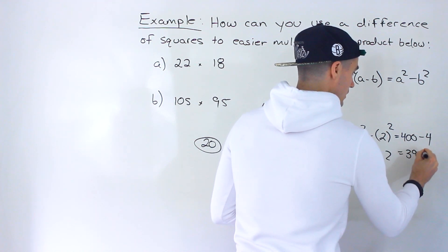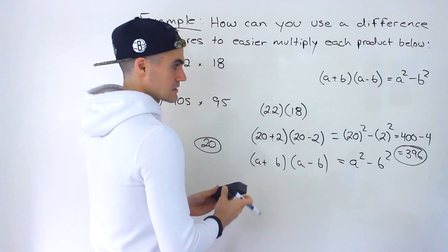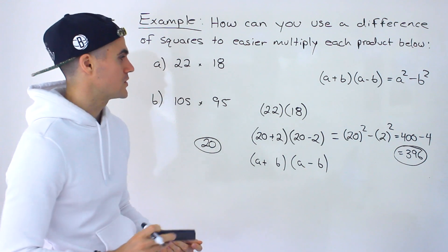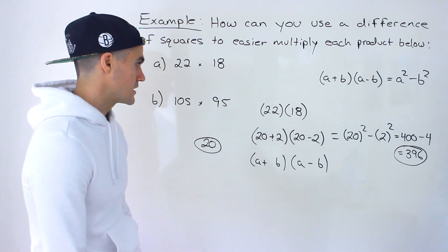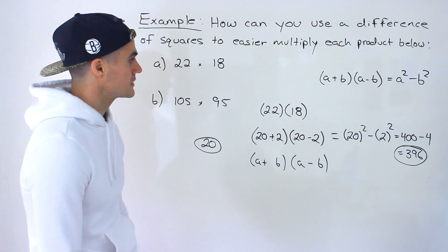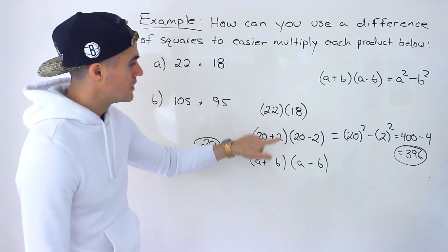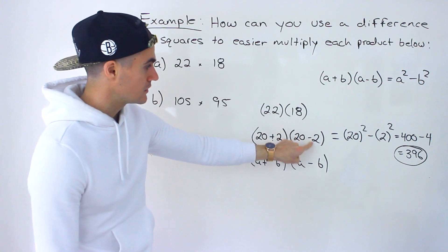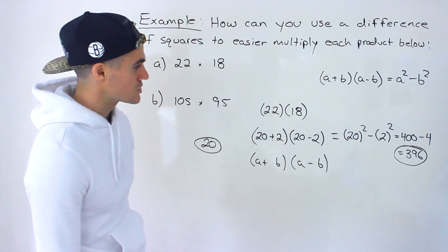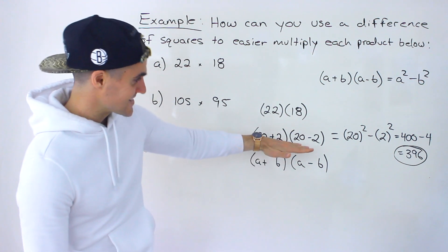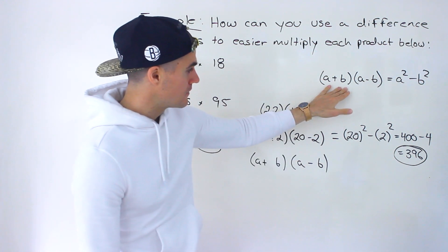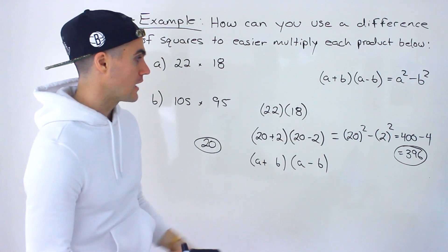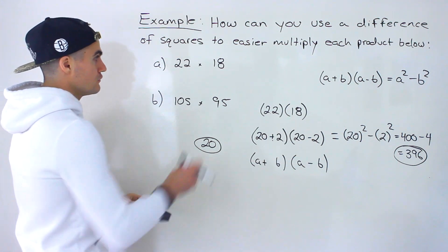And then 2 to the power of 2 is 4. So we end up with 396. So again kind of a weird question but I see it come up sometimes. So just in case you run into it wanted to go over it. Basically you got to find the midpoint between these two values, put that midpoint here and then subtract the difference or add the difference and subtract the difference.